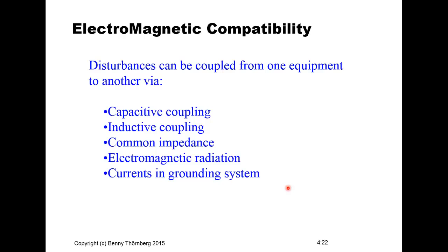Disturbances can be coupled from one piece of equipment to another in different ways: capacitive coupling, inductive coupling, common impedance coupling, electromagnetic radiation, and different currents in the grounding system. We'll traverse this list of coupling mechanisms to understand the technical background and what you can do to suppress them.